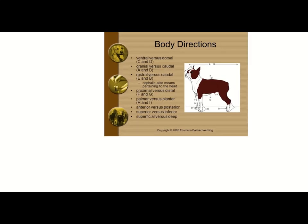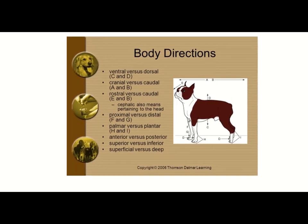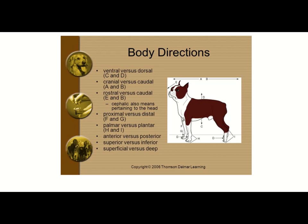I'm picking things from the internet, looking at them, and critiquing them — the more you look at, the more you can interpret these. This slide calls them body directions. It points out the antonym pairs: ventral versus dorsal, cranial versus caudal. In the head region you must use rostral versus caudal. They also note that cephalic means pertaining to the head. Then proximal — closer to the point of reference — and distal — more distant. If you designate a point of reference, you can use proximal versus distal.